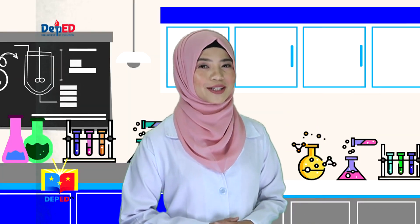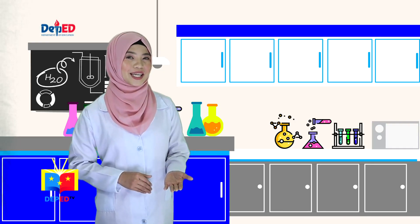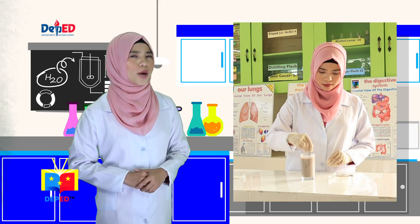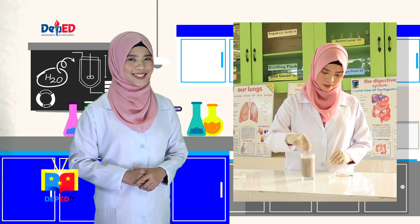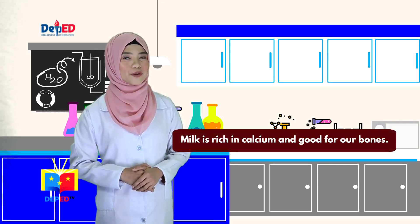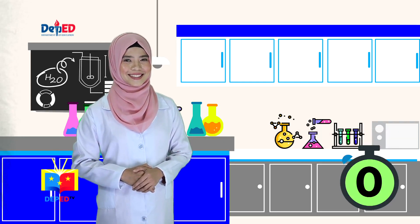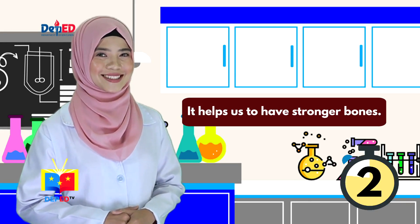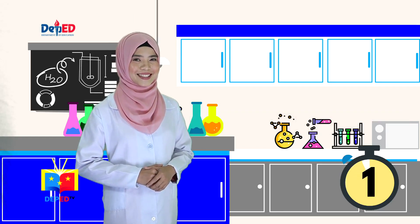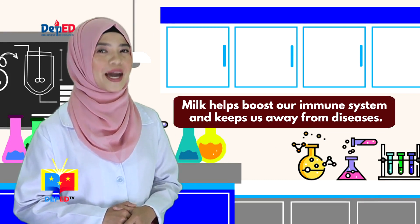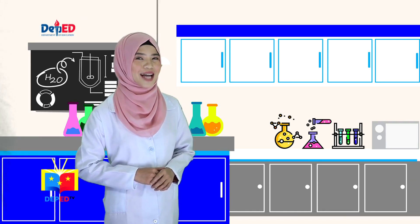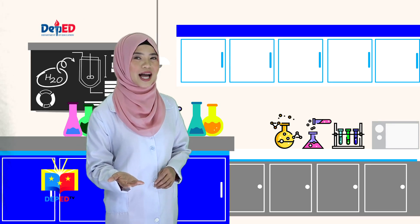Materials mixed with other materials undergo change and can be beneficial in various ways. In our activity, we mixed milk, cocoa, and sugar in a glass of hot water and it became chocolate milk. What are the benefits of drinking a glass of milk every day? Milk is rich in calcium and good for our bones — it helps us have stronger bones. Milk is rich in protein and is good for our muscles. Milk also helps boost our immune system and keeps us away from diseases. So don't forget to drink your milk every day to stay healthy!